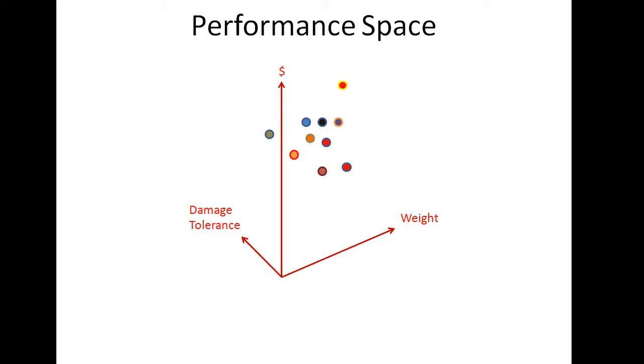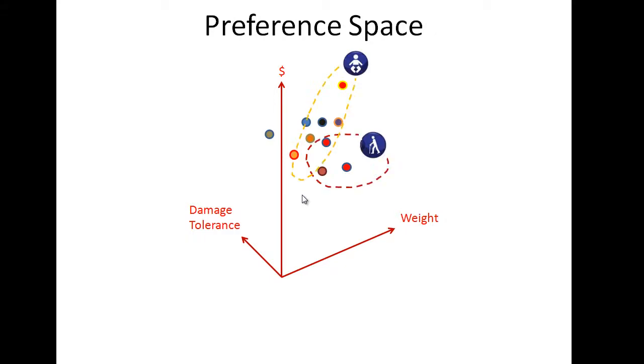There are many other types of spaces. One is called performance space. Performance space represents the measurable performance of a design. Say for example in this design, you have cost, you have weight and you have damage tolerance. So if you plot these designs, they are distributed like this. And this could be called a performance space. But here we have only shown three axes. It could be a lot more axes than this. And when we can't do that, we have to use our imagination and think of it as that space.